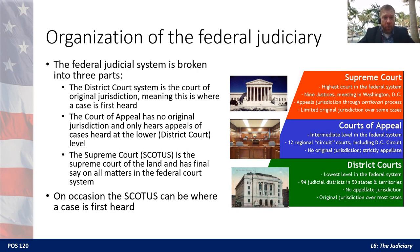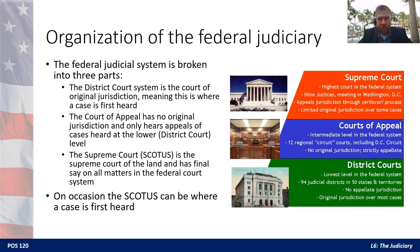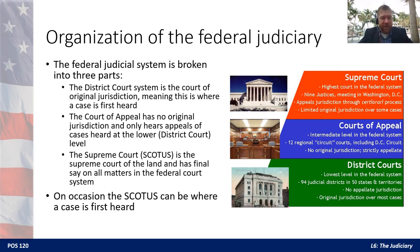So how is the federal judiciary organized? It's really broken up into three courts. At the very lowest level is the district court system — the court of original jurisdiction, meaning if a federal case is taken to the federal court system, this is the first place it will typically be heard. Above that you have the court of appeals, which has no original jurisdiction and generally can only hear appeals from other court decisions. And then finally you've got the Supreme Court of the United States — SCOTUS — the final court. Whatever the Supreme Court decides is final, unless a later Supreme Court overrules or changes the decision.